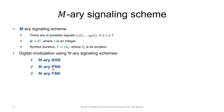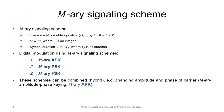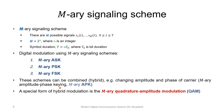We can extend ASK, PSK, and FSK to M-ary ASK, M-ary PSK, and M-ary FSK. These schemes can be combined to get QAM (quadrature amplitude modulation), or amplitude phase keying (APK). QAM is a special hybrid modulation that includes both phase and amplitude variations across the symbols.